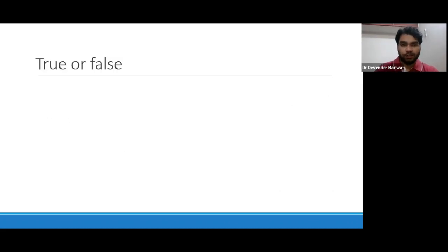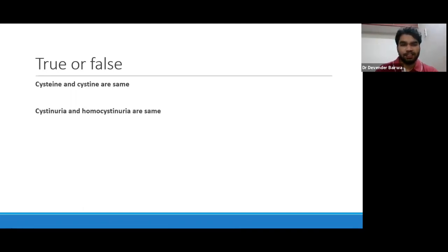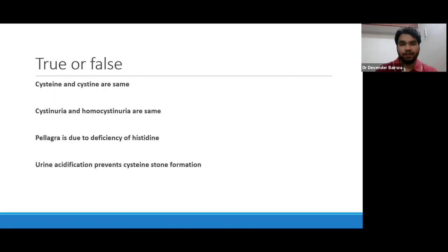There are four statements. Let's see whether they are true or false. First: cysteine and cystine are the same. Second: cystinuria and homocystinuria are the same. Third: pellagra is due to deficiency of histidine. And fourth: urine acidification prevents cystine stone formation. In subsequent slides, please try to find out answers for all these problems.